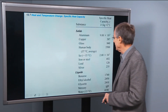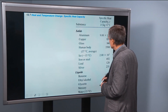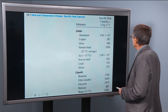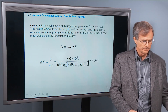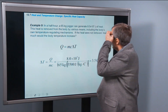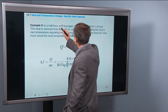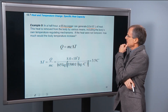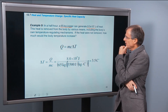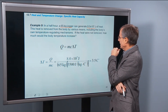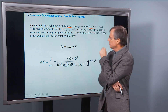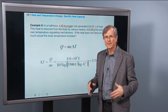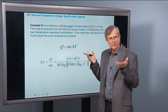Here are some specific heat capacities measured in joules per kilogram per degree C for various materials. In a half hour, a 65 kilogram jogger can generate 8 × 10⁵ joules of heat. The heat is removed from the body by various means, including the body's own temperature-regulating mechanisms. If the heat were not removed, how much would the body temperature increase?